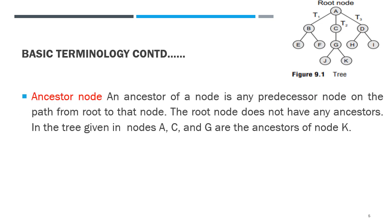What is an ancestor node? An ancestor node is any predecessor node on the path from the root to that node. Consider node K. The ancestor nodes are all nodes in the path from root A to K. The parent of K is G, the parent of G is C, and the parent of C is A. So the ancestors of K are A, C, and G.